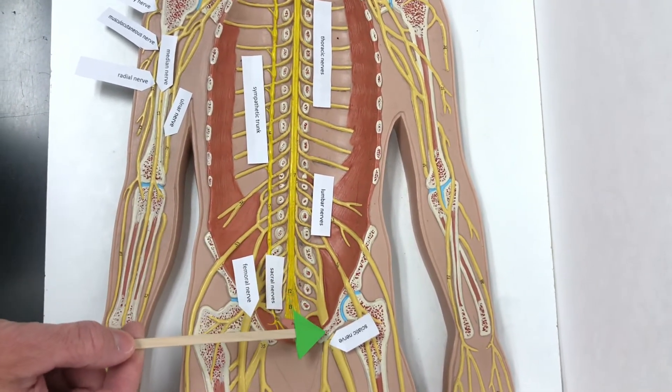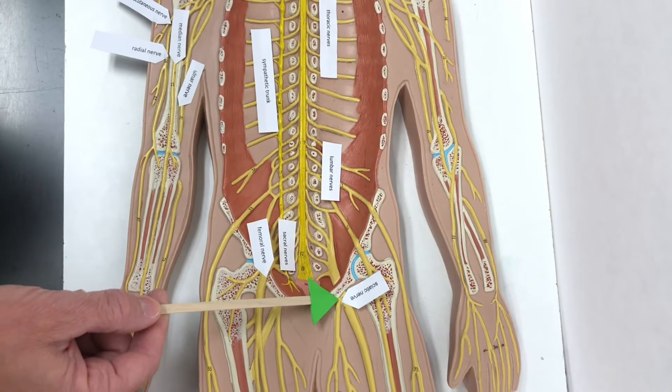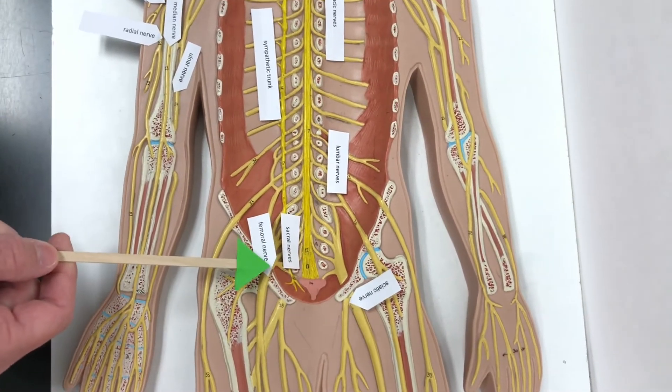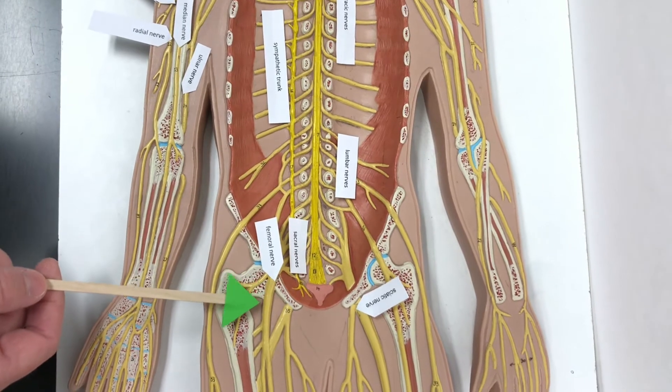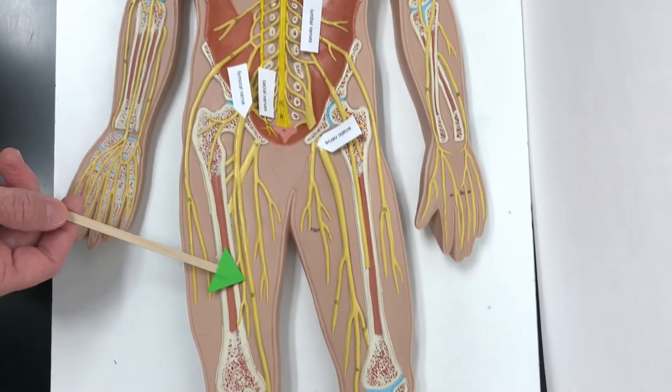Going down the leg, we have the sciatic nerve. We also have the femoral nerve, which innervates the muscles of the anterior thigh.